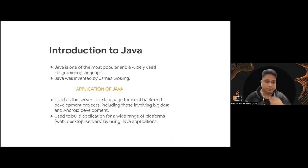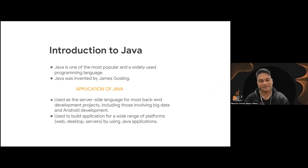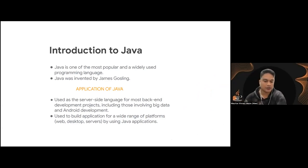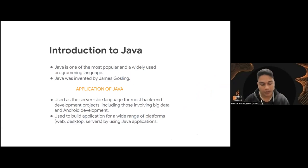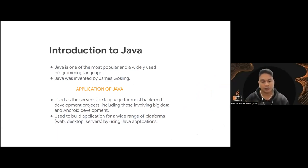Java is one of the most popular and widely used programming languages. It was invented by James Gosling. Java is most likely used as a server-side language for most back-end development projects, including big data and Android development. It's also used to build applications for a wide range of areas such as web development, desktops, and servers.